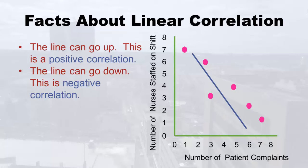But you don't always have a line going up. I made up some data: on the x-axis is number of patient complaints, and on the y-axis, number of nurses staffed on the shift. When you have a lot of nurses, you don't have as many patient complaints because patients are being attended to. Some people call this an inverse correlation, but I'm calling it a negative correlation — as one goes up, the other goes down. That's depicted visually with a line going down.